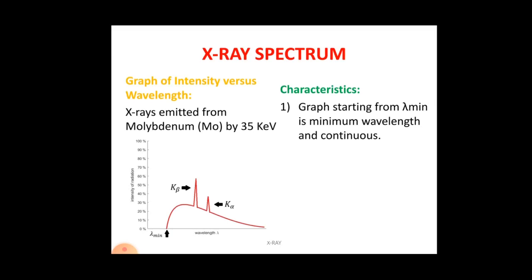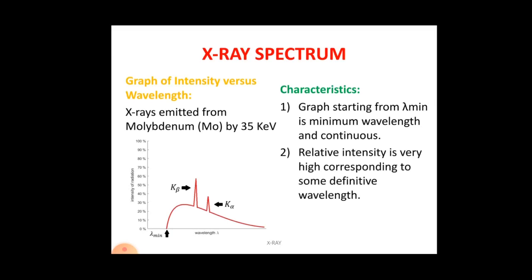The second characteristic is that relative intensity is very high at some definite wavelengths. You can see two spikes on the graph — K-beta and K-alpha — which have relatively higher intensity compared to other points. Whatever definite wavelength point you consider on this graph, the relative intensity at these two spikes is very high.